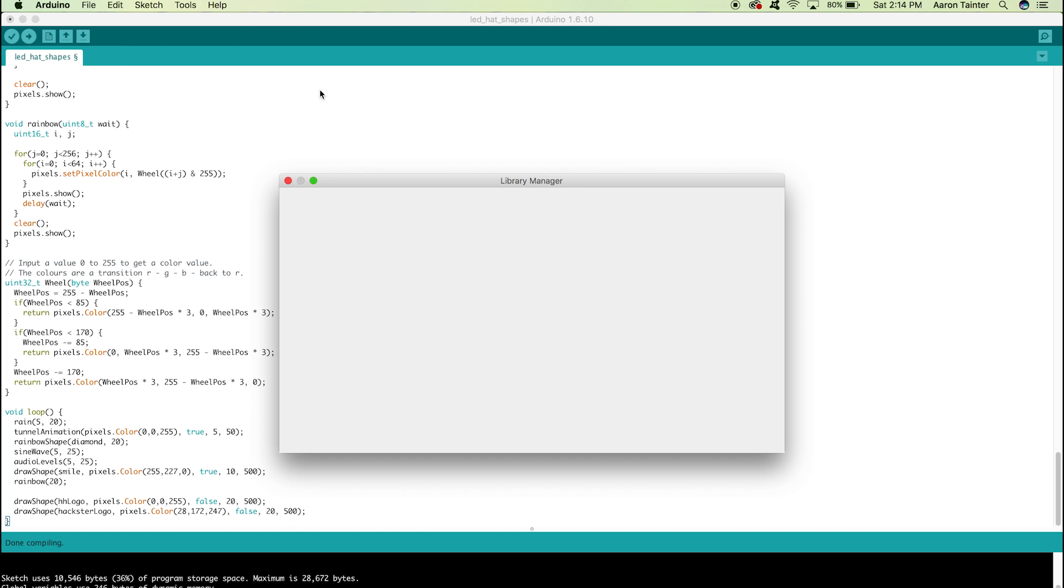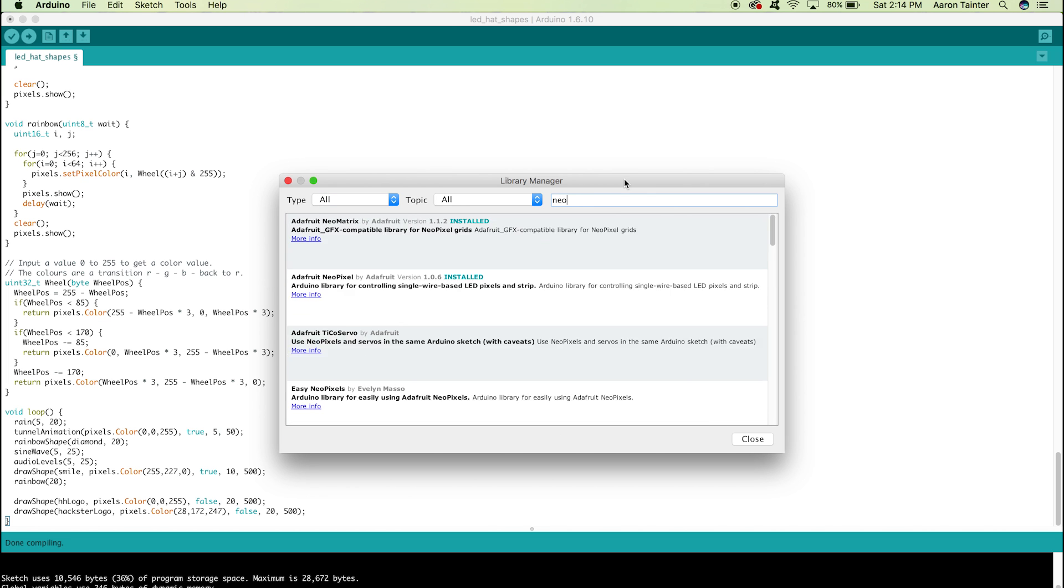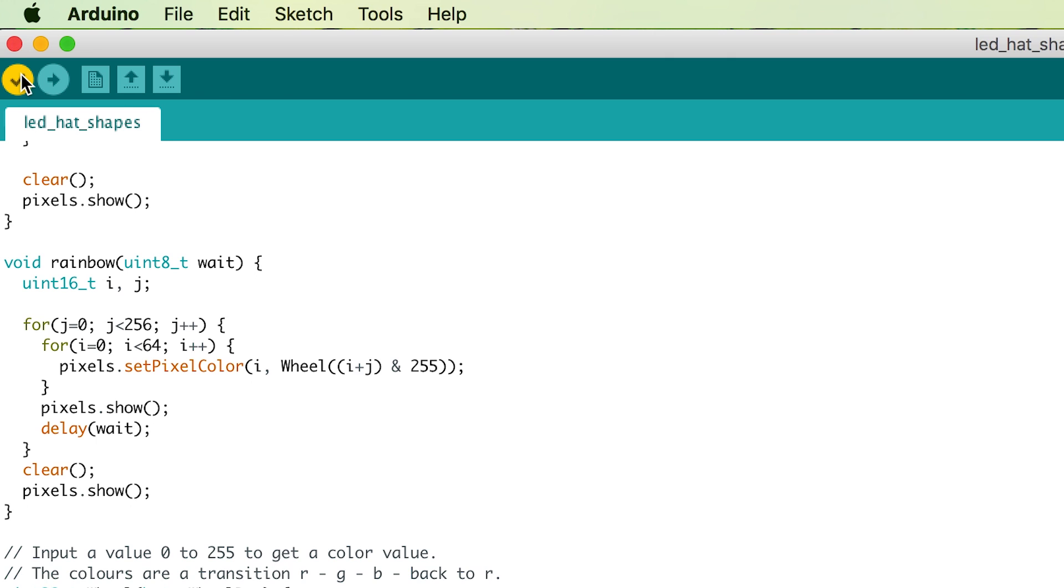You'll also need to install a library for the LED matrix. By clicking Sketch, Include Library, Manage Libraries, you can open the Library Manager. From there, I installed the Adafruit NeoPixel library. Finally, I clicked verify to compile my code, then upload to run it on the board.